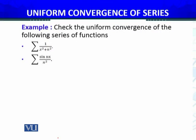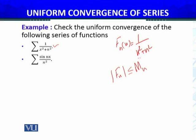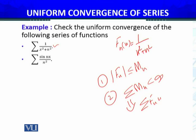In the first two examples we will decide whether the given series of functions is uniformly convergent or not. We are looking for non-negative real numbers M_N such that |F_N| ≤ M_N, and the series of real numbers M_N must be convergent. Then we can conclude the series of functions F_N is uniformly convergent. This is the Weierstrass M-Test.